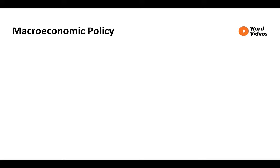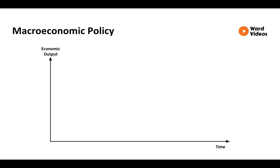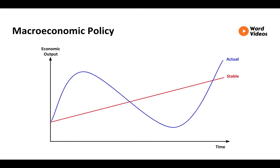Let's look at this graphically. On our X-axis is time, and on our Y-axis is output for an economy. The government wants stable economic growth, as this fosters strong and sustainable growth on which the creation of jobs, wealth and improved living standards depend. However, in reality, the output of the economy fluctuates.